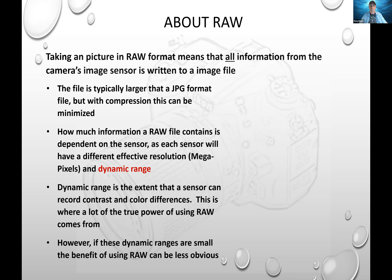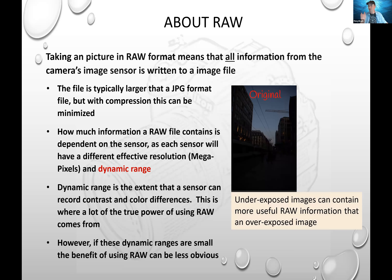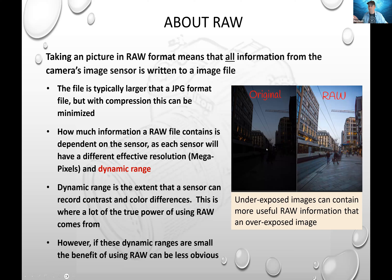The biggest benefit from a raw file is the dynamic range of the sensor — basically the extent that the sensor can record contrast and color differences of what it's seeing. This is the true power of raw. Underexposed images can actually contain more useful raw information than overexposed images — you don't want to blow out your image. If you take a raw photo and your strobe doesn't go off and you get a totally black photo, the dynamic range of the sensor is still recording light information, which allows you to actually resurrect that photo.